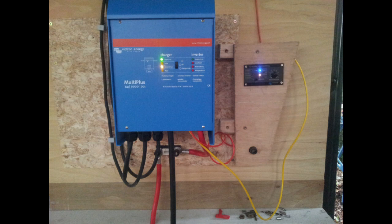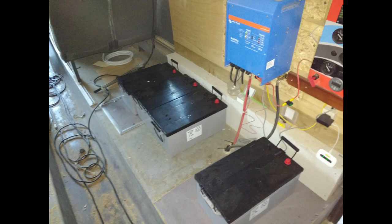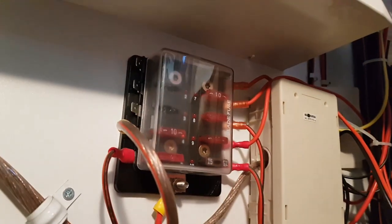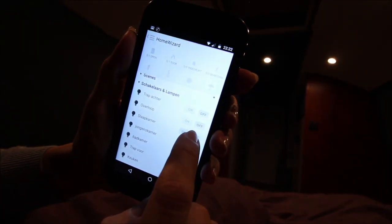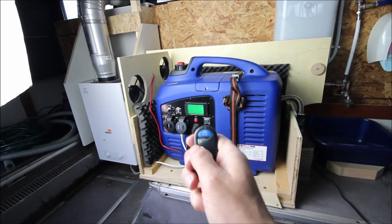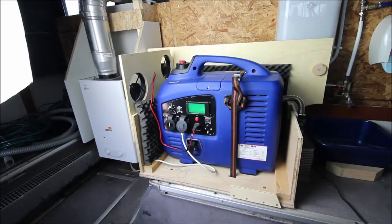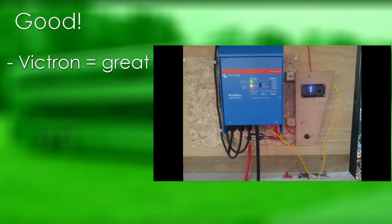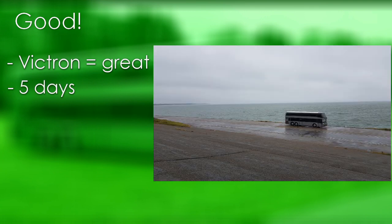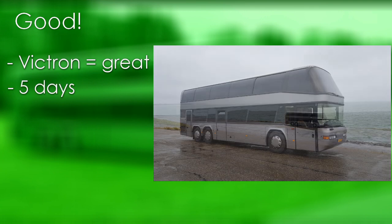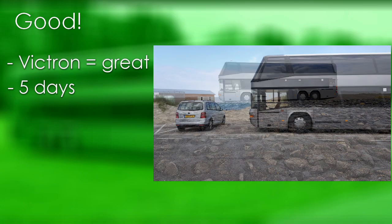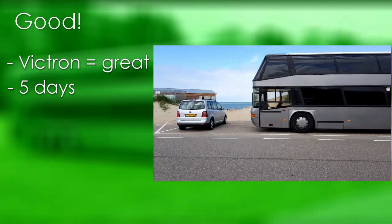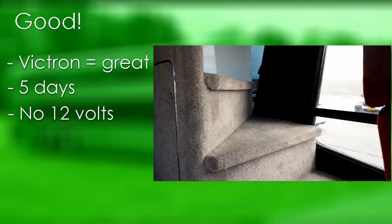Talking electrics now. We have a Victron 3000-watt charger/inverter with four 230 ampere-hour batteries, a Cyrix battery combiner, and a 24-volt circuit. Lights have wireless switches which are also connected through a Home Wizard to an app on the phone. The bus has no solar panels; for backup we have a generator. The Victron charger/inverter is invisible and therefore great. I calculated we can run the bus on the batteries for five days, and we experienced that this matches reality. In general this setup is great - I have no regrets running everything on 24 volts and not having an additional converter to 12 volts.